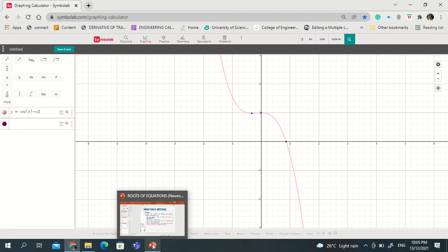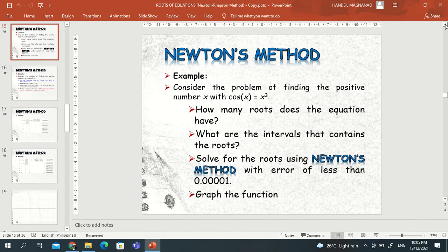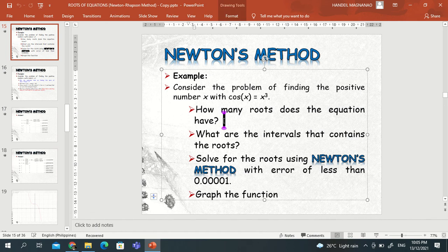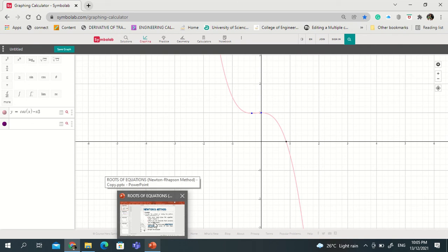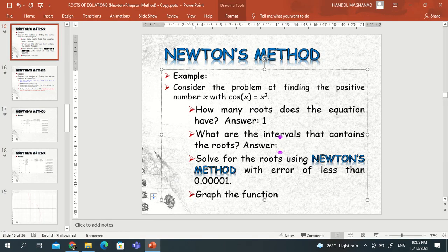Okay, so going back, the question was how many roots does the equation have? So the answer is one. And what are the intervals that contains the root? There's only one interval. So what's the interval? As you can see here, the root is between zero and one. So you can write it zero and one. Okay, so then put this in the open interval format which is zero, one. So this is the answer for this.